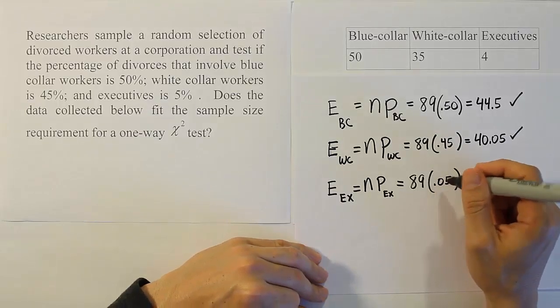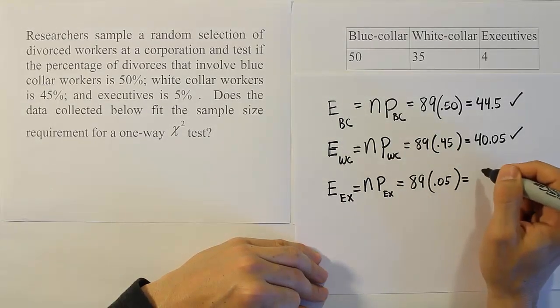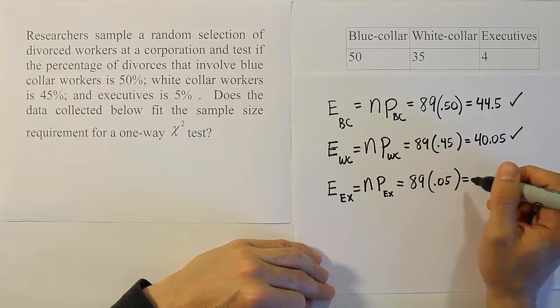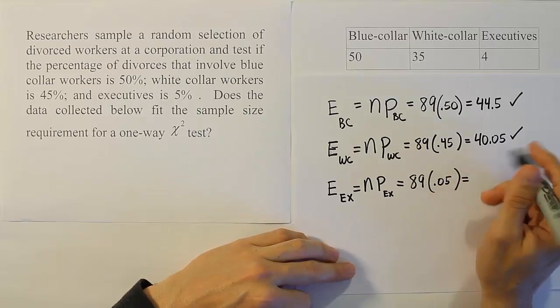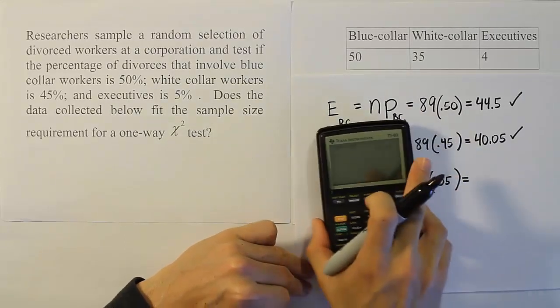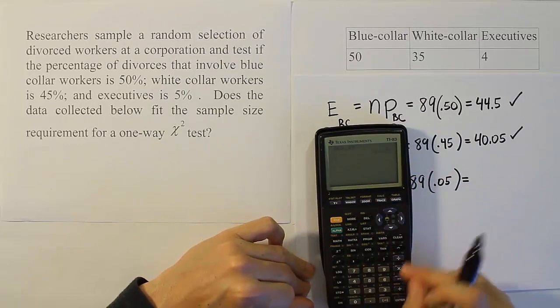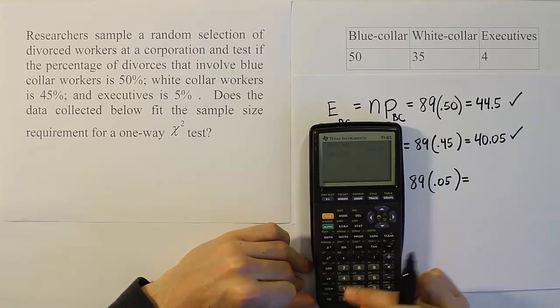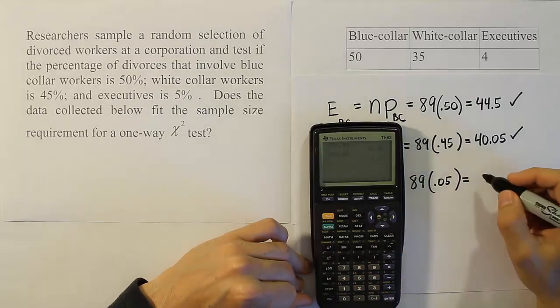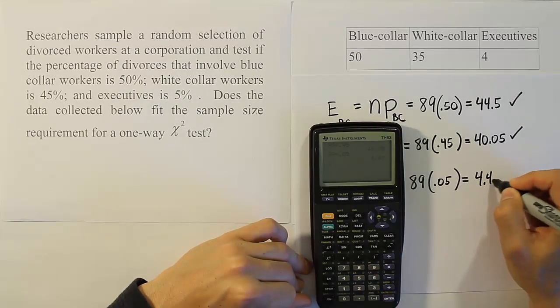I'm looking at 89 times 0.05. If I took 5% of 100, I'd get 5. So 5% of anything less than 100 is less than 5. I know at this point it's going to be too small, this value. If we do 89 times 0.05, we end up with 4.45.